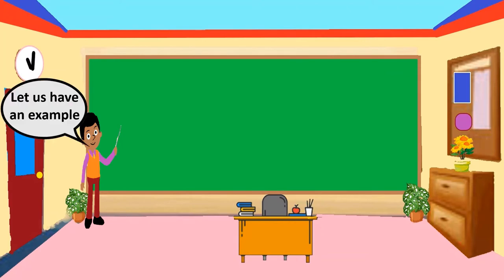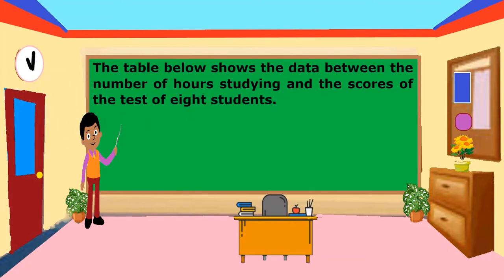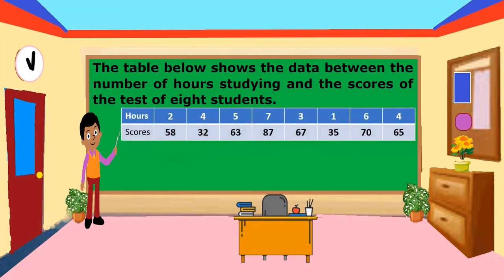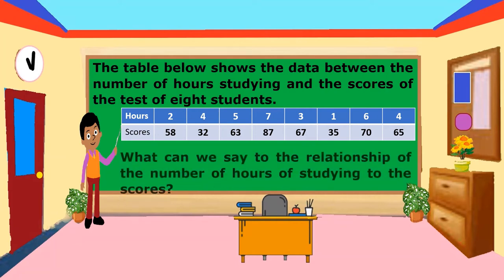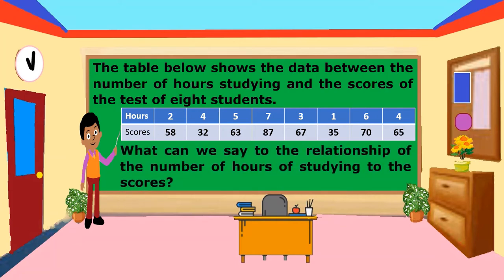Let us have an example. The table below shows data between the number of hours studying and the test scores of 8 students. The number of hours of studying: 2, 4, 5, 7, 3, 1, 6, and 4. The respective scores: 58, 32, 63, 87, 67, 35, 70, and 65. What can we say about the relationship of the number of hours of studying to the scores?